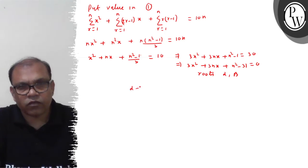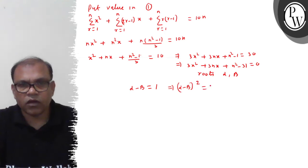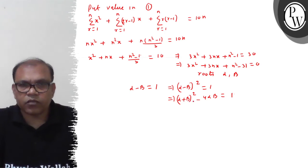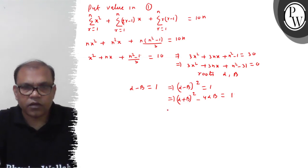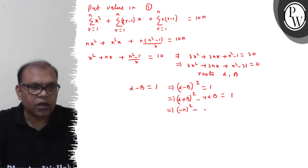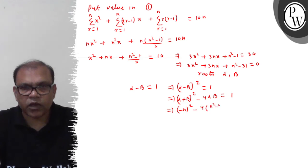Since the roots are consecutive integers, alpha minus beta = 1, so (alpha - beta)² = 1. We expand this as (alpha + beta)² - 4·alpha·beta = 1. The value of alpha + beta = -n (from Vieta's), so this becomes n² - 4·alpha·beta = 1. And alpha·beta = (n² - 31)/3.